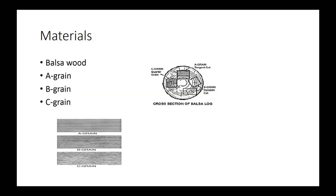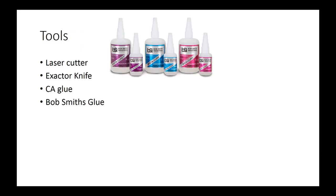Pretty much the only material is balsa wood. There are three different types. If you look at the picture, it's basically a tree trunk cross-section showing where each grain type comes from — A grain, B grain, and C grain. Another picture shows the different textures, and based on what kit, plan, or own design you choose, you use a different type of grain.